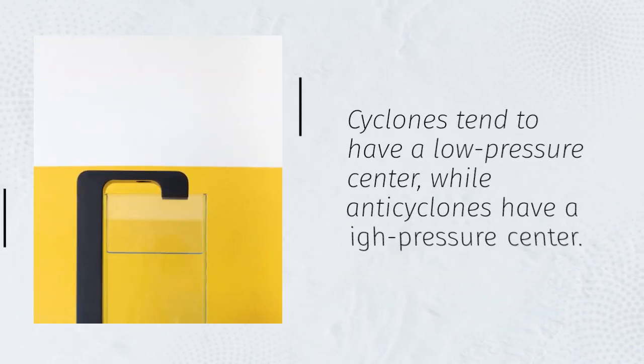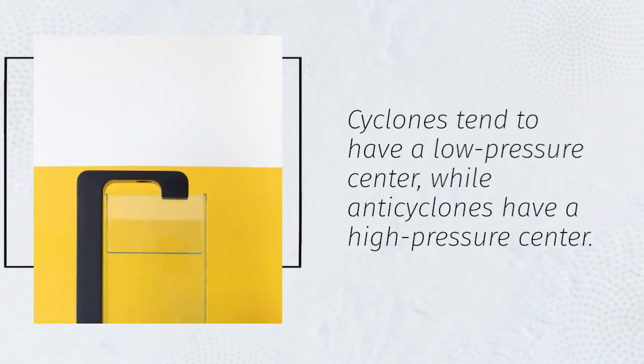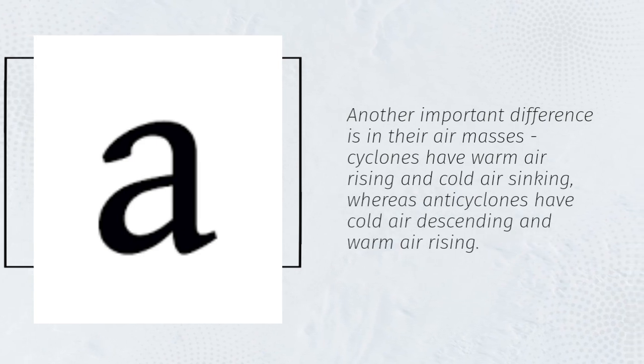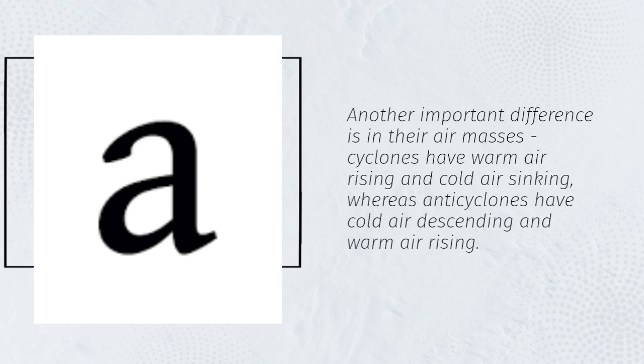Cyclones tend to have a low pressure center, while anticyclones have a high pressure center. Another important difference is in their air masses. Cyclones have warm air rising and cold air sinking, whereas anticyclones have cold air descending and warm air rising.